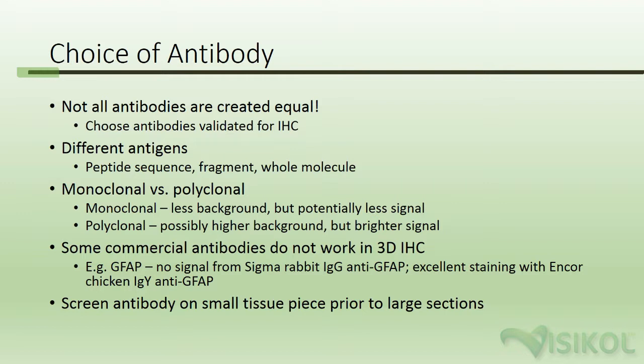Monoclonal versus polyclonal antibodies. With monoclonal antibodies, you'll get less background but potentially less signal. With polyclonal antibodies, there's possibly higher background, but you get a much brighter signal.